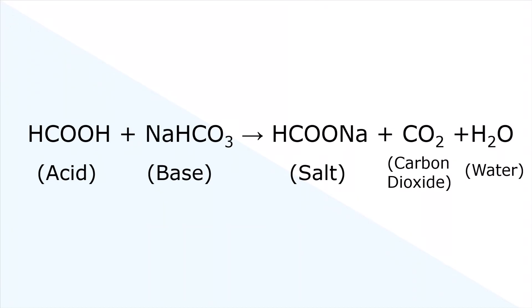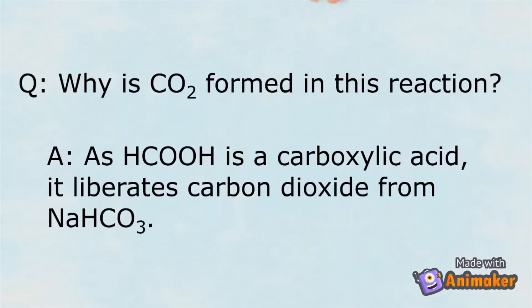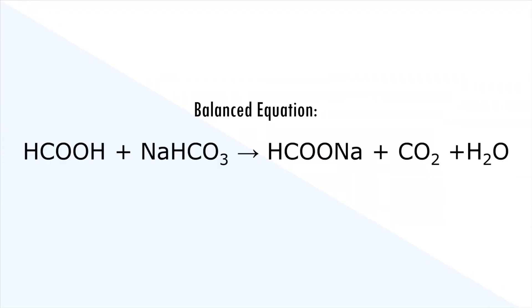When formic acid is combined with baking soda, the base, three products will be formed. Sodium formate is the salt formed along with carbon dioxide and water as the byproducts, just like the previous equation. As formic acid is a carboxylic acid, it liberates carbon dioxide from baking soda. The balanced equation is presented like this.